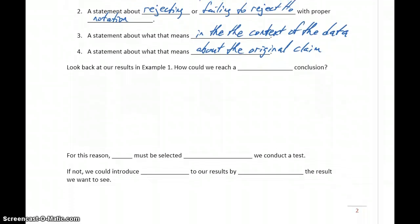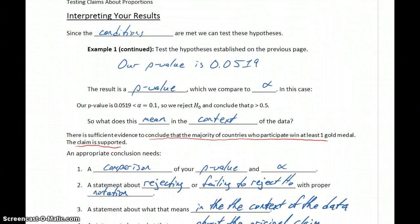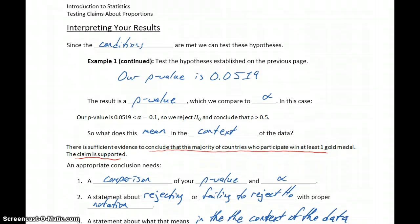So look back at our results in example one. What we want to discuss is, how could we reach a different conclusion? Or would it be possible to reach a different conclusion? So in this case, we had our claim. The claim was provided to us, so that forced our hypotheses to be the hypotheses that we used.